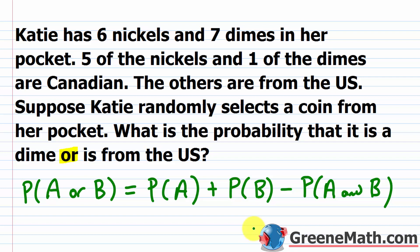In this problem, we don't have mutually exclusive events. Mutually exclusive events are two events that can never occur simultaneously. Katie has six nickels and seven dimes in her pocket; five of the nickels and one of the dimes are Canadian. She randomly selects a coin — what is the probability that it is a dime or is from the US? We can't drop the subtraction term here because some dimes are also from the US, meaning the two events can overlap.